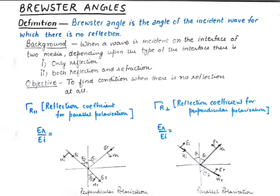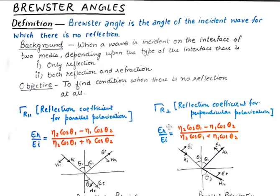We know that theta one is the angle of incidence and theta two is the transmission angle, and we want the reflected wave to go away. So the starting point of calculating the Brewster Angle will be the knowledge of the reflection coefficients for both cases. For parallel polarization the reflection coefficient is: (eta_2 * cos(theta_1) − eta_1 * cos(theta_2)) / (eta_2 * cos(theta_1) + eta_1 * cos(theta_2)). And for perpendicular polarization it is: (eta_2 * cos(theta_1) − eta_1 * cos(theta_2)) / (eta_2 * cos(theta_1) + eta_1 * cos(theta_2)).